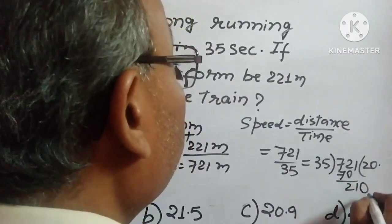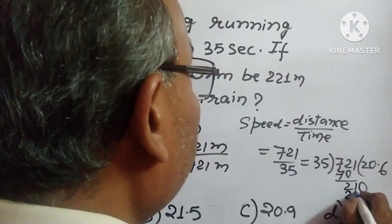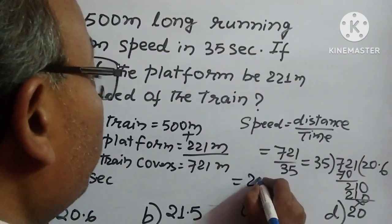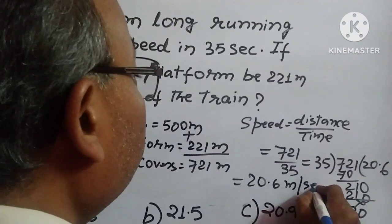Then 210 we will bring over here, so this is 21. So answer is 20.6 meters per second.